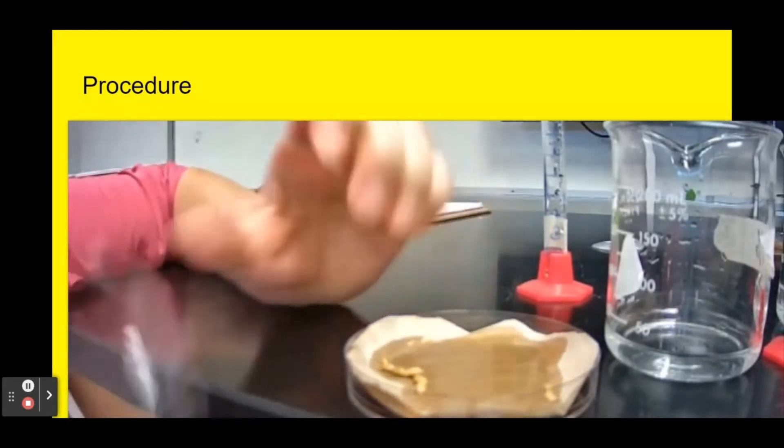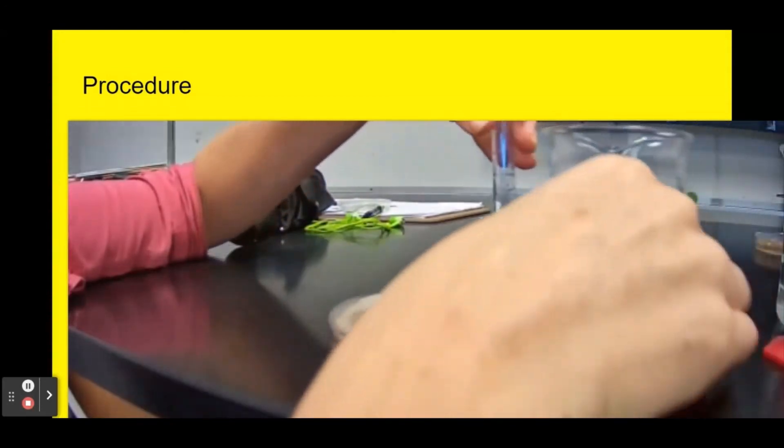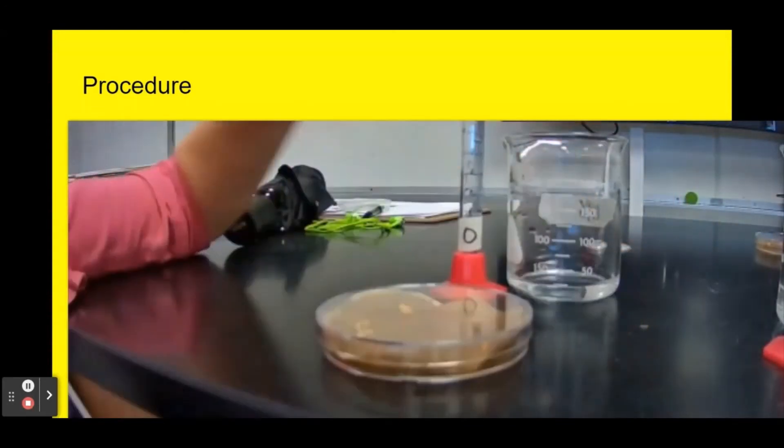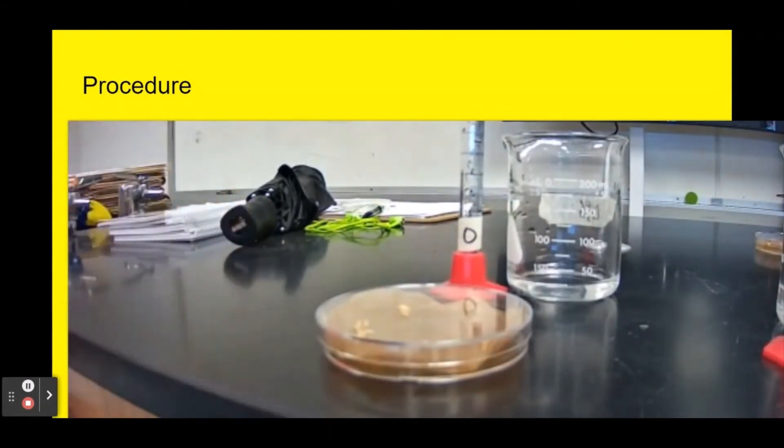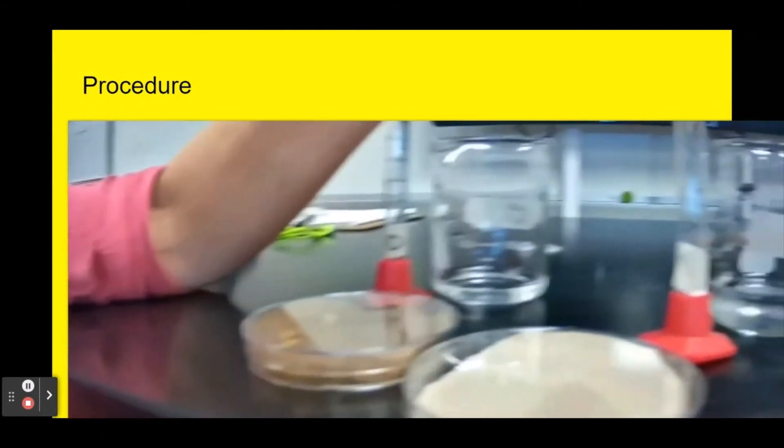I will then label my tray and put the lid on it. For right now I'm just going to set it in front of the zero percent so I can remember that was my zero percent tray.